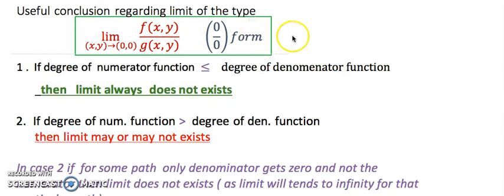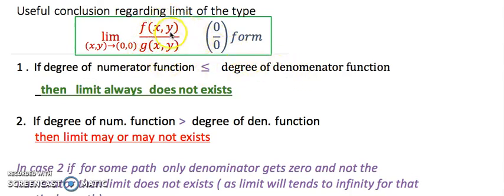There is always some doubt about whether the limit exists or not. There are some observations which will help you get a clue. The first one is: if you observe that the degree of the expression in the numerator is less than the degree in the denominator — either directly from the question or after substitution — in that case you can directly assume that the limit will always not exist.